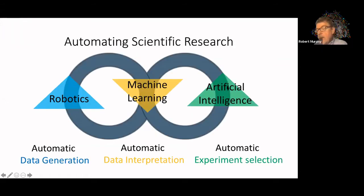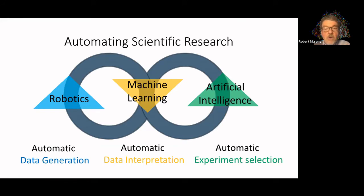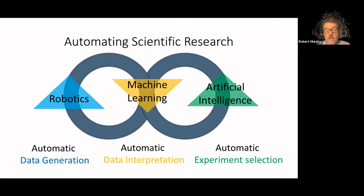The focus of the program is on automating the process of doing science, which has three main pieces: the ability to automatically generate data through robotics for doing scientific experiments, machine learning to build predictive models from acquired data, and artificial intelligence to decide what experiments would improve the model. We cycle around again so whatever data we have, we use it to build a model, decide what experiments to do next, and execute them — making this a closed loop process.